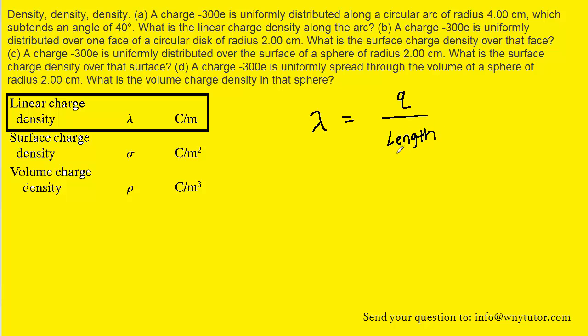And each problem will have a different type of length. So for example, in this case, we have a circular arc with a certain radius, and it subtends this angle of 40 degrees. So it might look something like this.